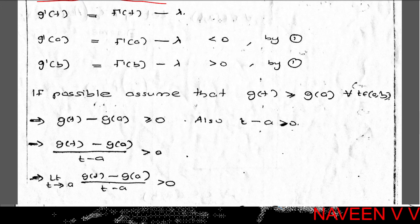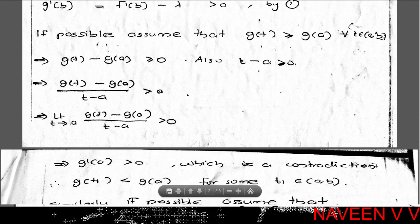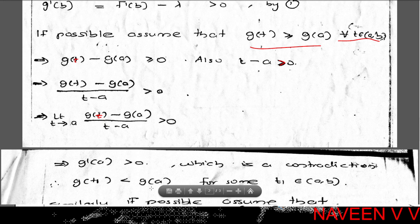Since g'(a) < 0, there exists some t1 in open interval (a, b) such that g(t1) < g(a). To see this: if we assumed g(t) ≥ g(a) for all t in (a, b), then g(t) - g(a) ≥ 0 with t - a > 0, so [g(t) - g(a)] / (t - a) ≥ 0 for t near a in (a, b). Taking the limit as t → a gives g'(a) ≥ 0, a contradiction. So there exists t1 in (a, b) with g(t1) < g(a).